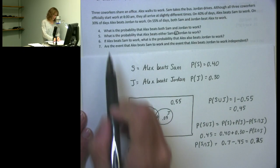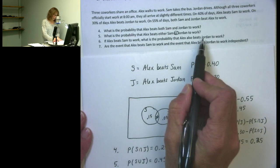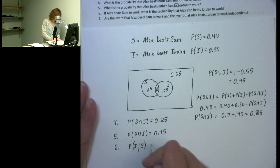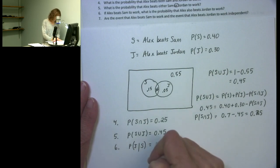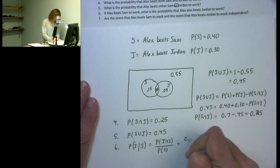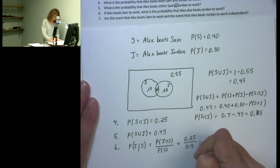Question 6 asks: given that Alex beats Sam to work, what is the probability that Alex also beats Jordan? This is a conditional probability: the probability of beating both Jordan and Sam divided by the probability of beating Sam. That gives us 0.25 divided by 0.40, which equals 0.625.